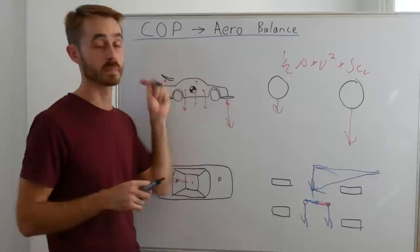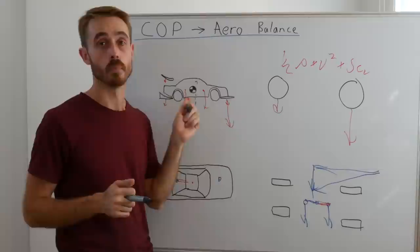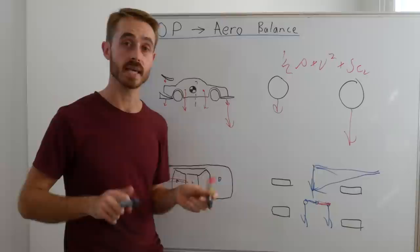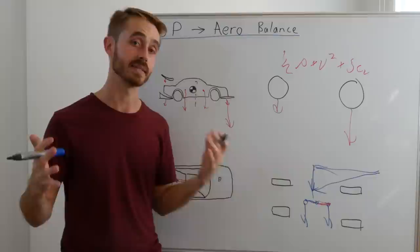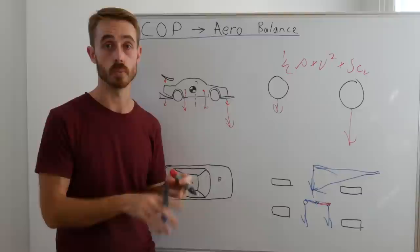And perhaps something to consider is that sometimes you need to run more wing than is necessary on a car like that, just to try and balance out the fact that the front end is all of a sudden making more downforce than you'd expected, so your center of pressure is shifted forwards, and your car doesn't have the balance that you thought it did when you set it up in CFD or wind tunnel or static.